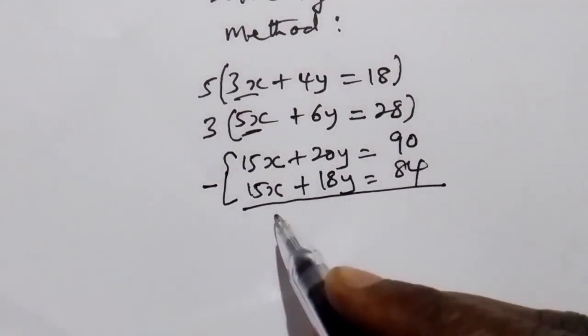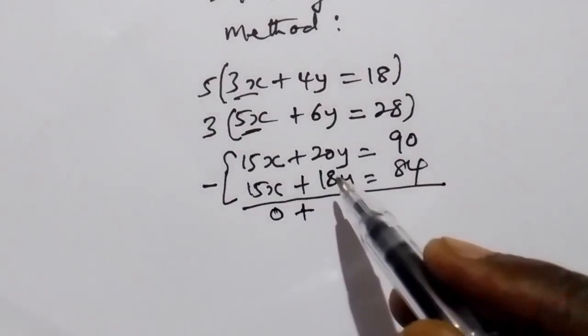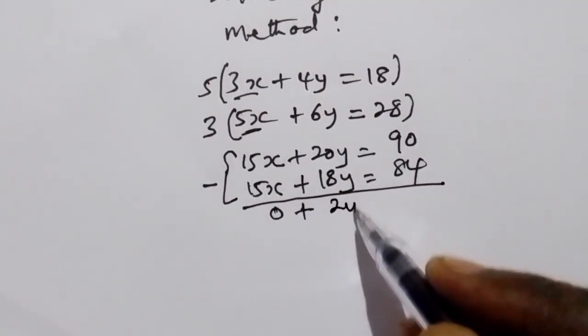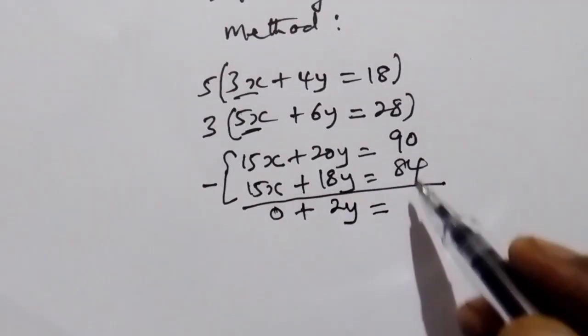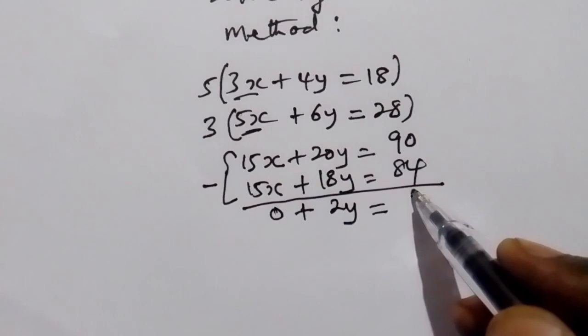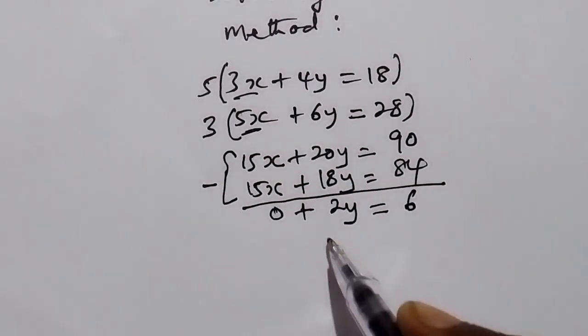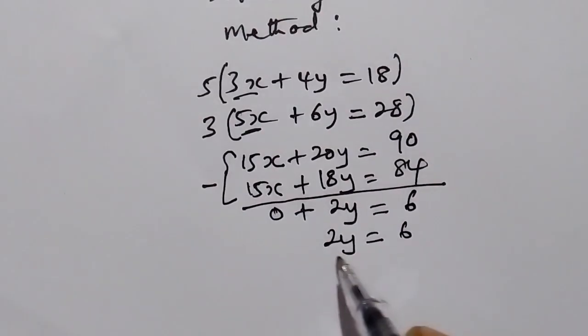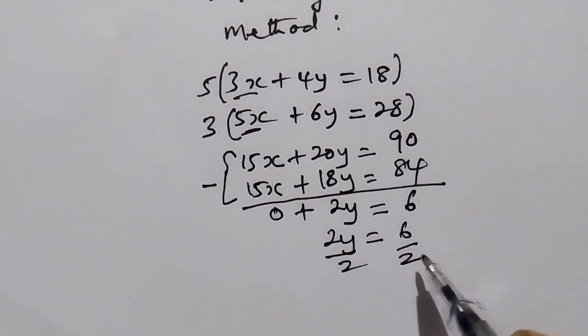This is 0 plus 20y minus 18y is 2y. 90 minus 84 is 6. 2y is equal to 6. We divide by 2.